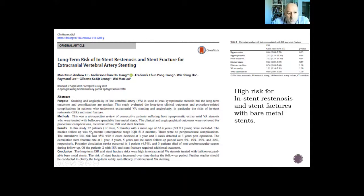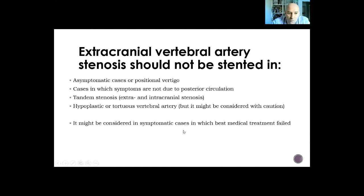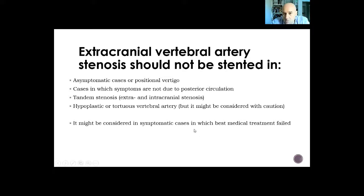For long-term risk of in-stent restenosis and stent fracture in extracranial vertebral artery stenting, there is a high risk with bare metal stents, and these should be avoided. Classical stroke risk factors were similar in both groups. In summary, extracranial vertebral artery stenosis should not be stented in asymptomatic cases, positional vertigo, cases where symptoms are not due to posterior circulation, tandem stenosis, combined extra- and intracranial stenosis, or hypoplastic or tortuous vertebral arteries — though the latter might be considered with caution. Endovascular treatment or surgery may be considered in symptomatic cases where best medical treatment has failed.